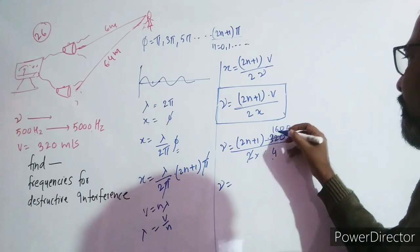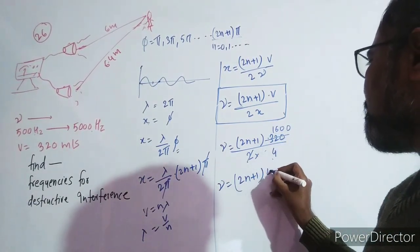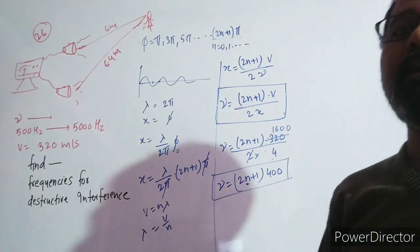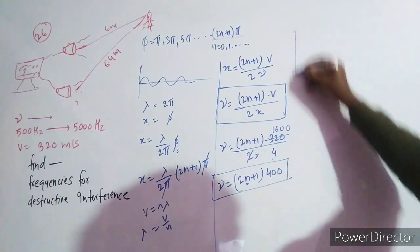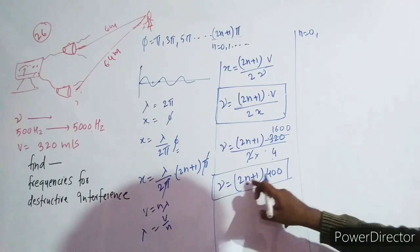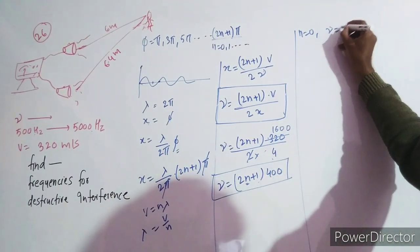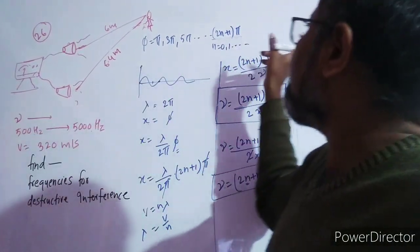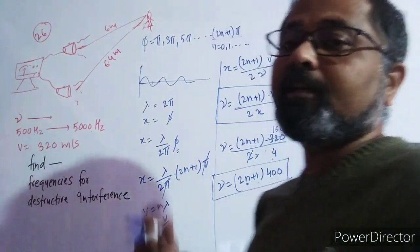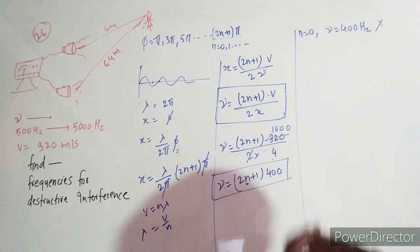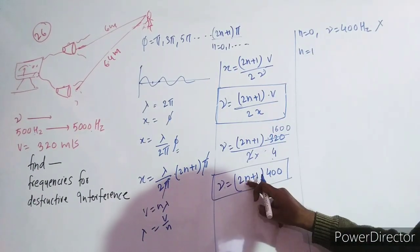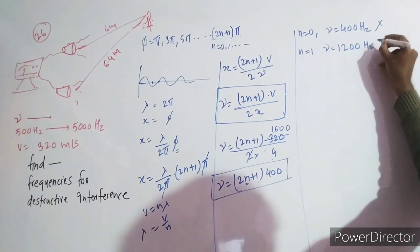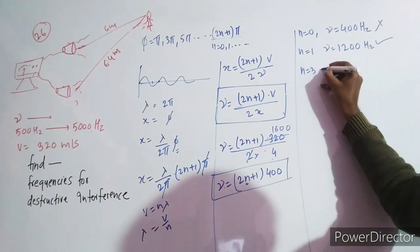यह simplify होकर frequency = (2n+1) × 400 Hz बनती है। अब अलग-अलग values of n डालते हैं। n=0 पर frequency = 1 × 400 = 400 Hz। n=1 पर frequency = 3 × 400 = 1200 Hz। यह दोनों 500–5000 Hz range में देखते हैं — 400 Hz range से बाहर है, 1200 Hz range में है।